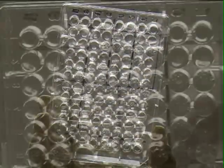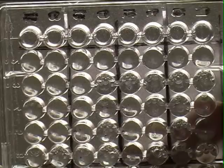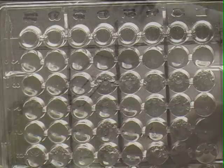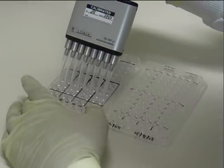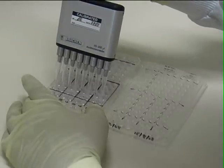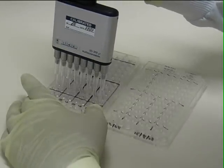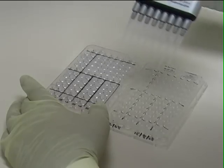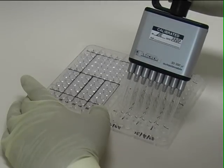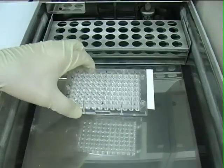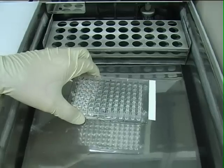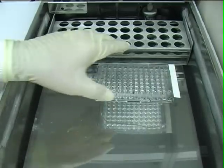When the lysate is finished spinning, you can usually see a deposit of cell stroma in a circle on the bottom of the well. We then carefully remove 100 microliters of the supernatant from this plate and add it to the corresponding wells in the flat well plate. The plate is then sealed and incubated for half an hour at 37 degrees centigrade.